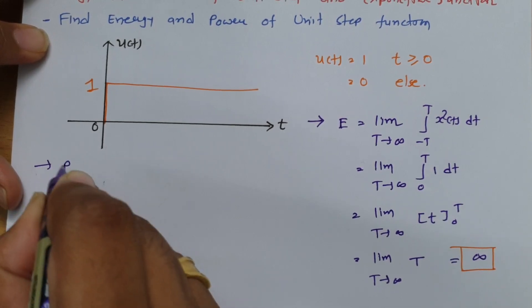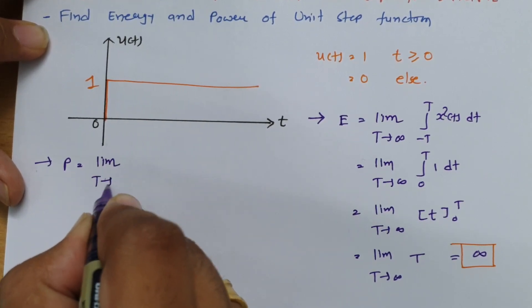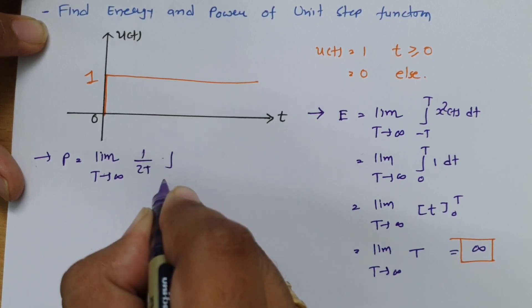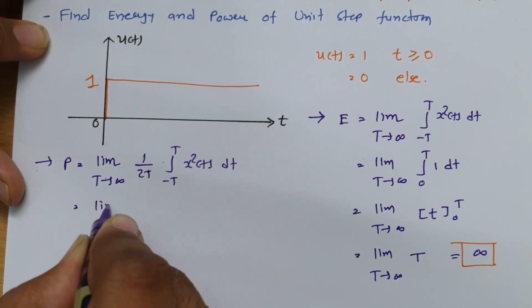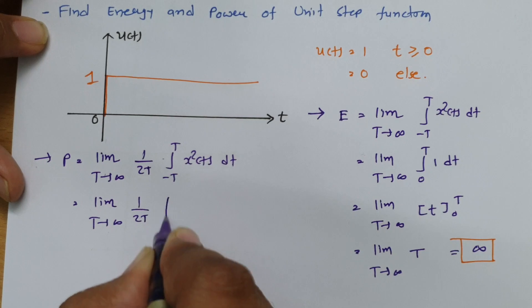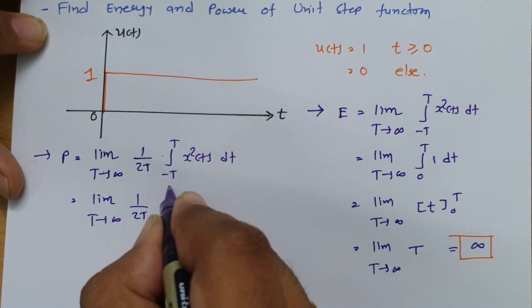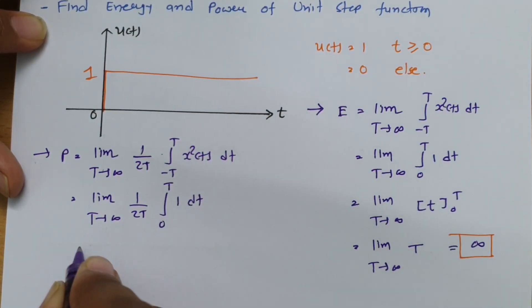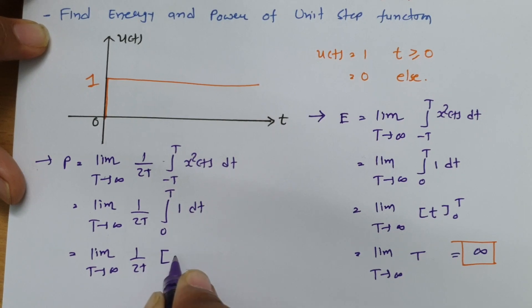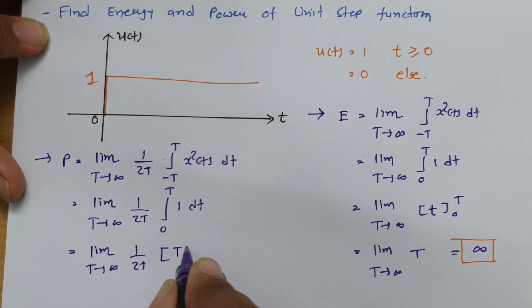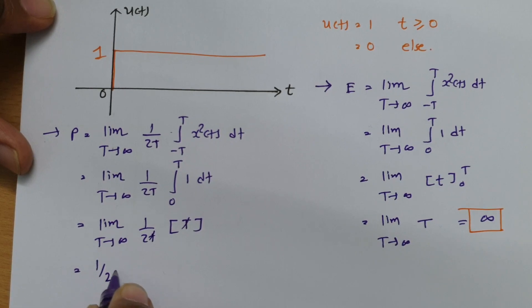Now let us calculate the power of this signal. The power formula is the limit as T tends to infinity of (1/2T) times the integral from minus T to T of x²(t) dt. Since the function is 1 for 0 to T, this becomes (1/2T) times the integral from 0 to T of 1 dt, which gives (1/2T) times T. The T's cancel, leaving 1/2.